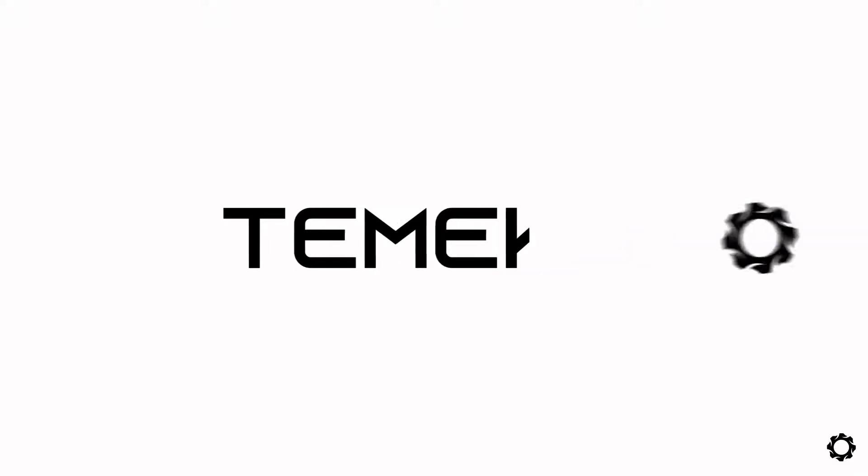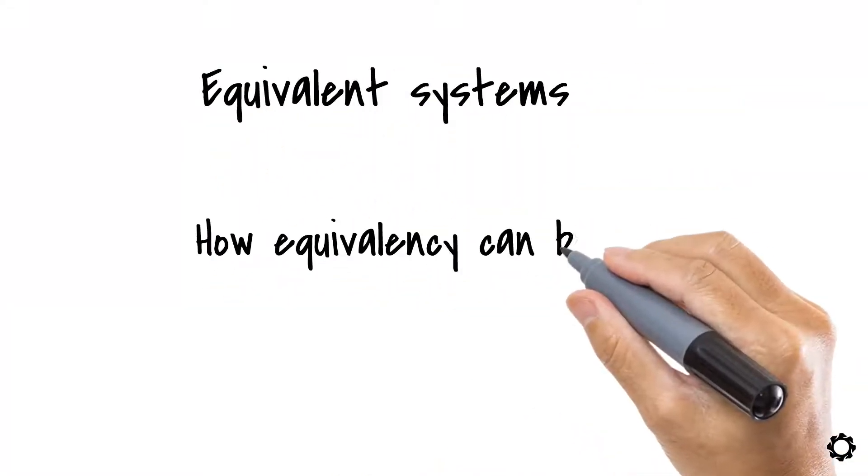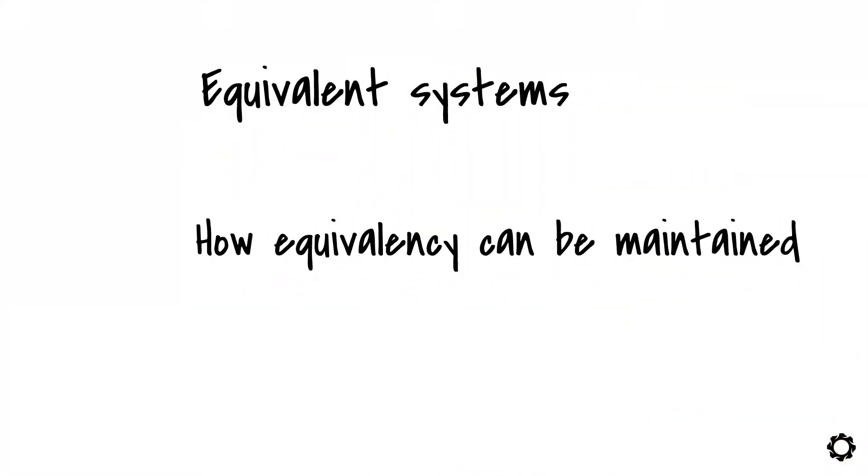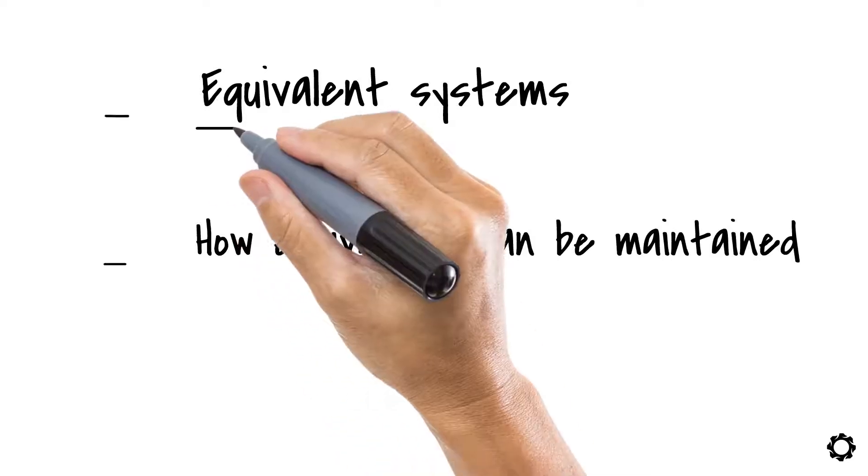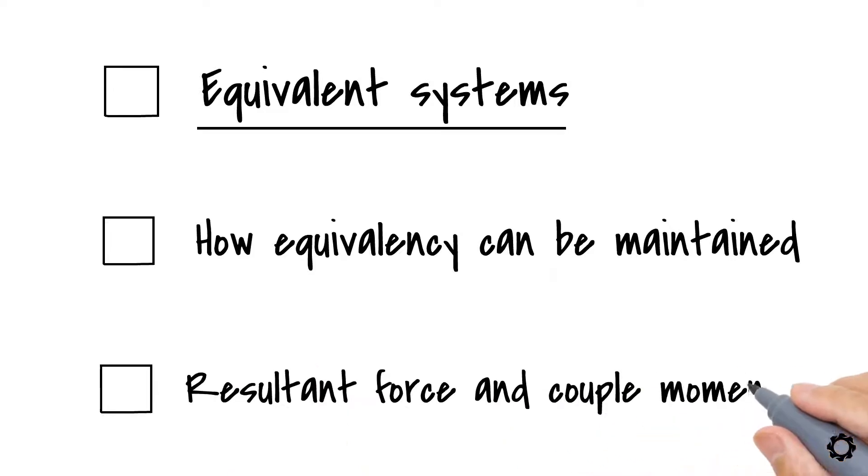Hi and welcome to Temeko. In this video, we will discuss the definition of equivalent systems and how equivalency can be maintained when a certain force is transferred from one point to another point on the body. We will also take a look at how we can simplify a system of forces and couple moments acting on a certain body into a single resultant force and couple moment which have the same external effect on the body.